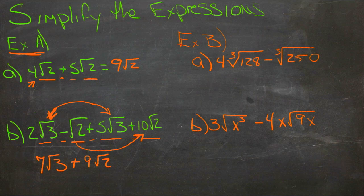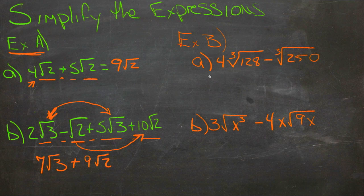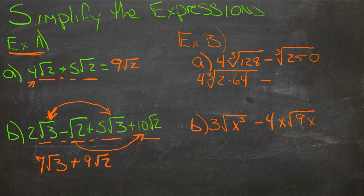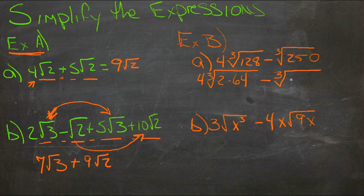Now, cube roots of 128 isn't even, so we need to split up 128. We'll write that as 4 cube roots of 2 times 64, because 64 is a cube, minus 3 cube roots of 2 times 125. 125 is a cube.